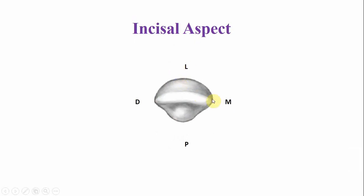From the incisal aspect, this is the mesial side, this is the distal aspect, this one is the labial, and this one is the palatal aspect. The crown appears wider mesiodistally as compared to the labiopalatal dimension. The incisal ridge is straight. The mesial and distal surfaces are relatively broad if you compare them with the permanent central incisors.